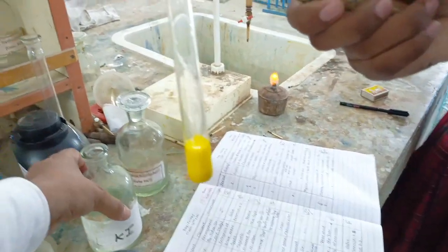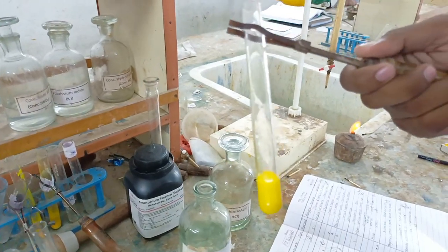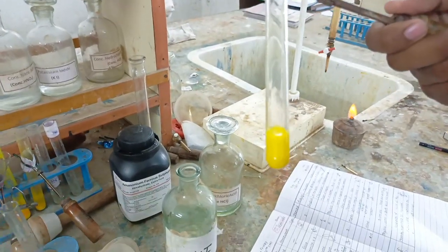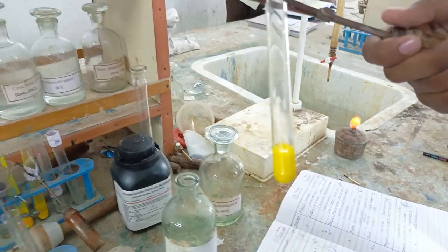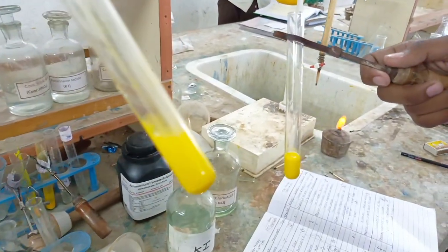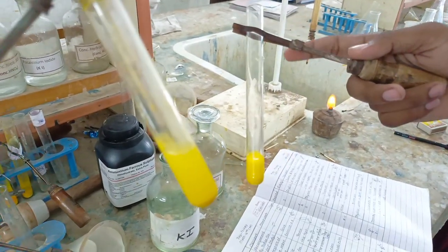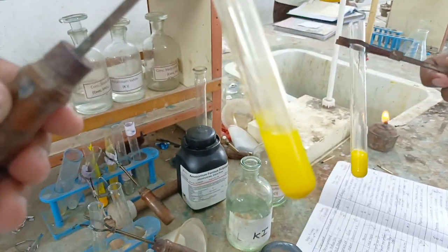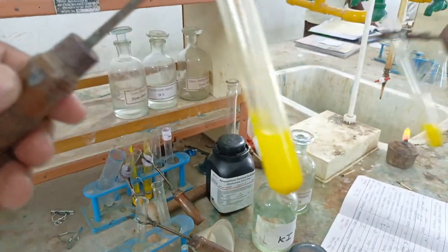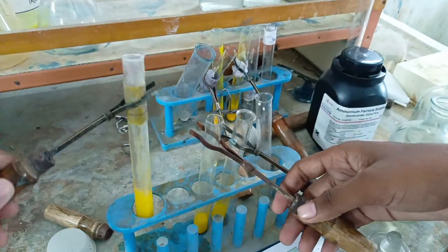You can see in the dissolved precipitate, after adding the potassium iodide, yellow precipitate will form. Similarly, in the dissolved precipitate, when we add the potassium chromate, again yellow precipitate will form. So we can confirm the lead ions by the potassium chromate and potassium iodide test. Thank you.